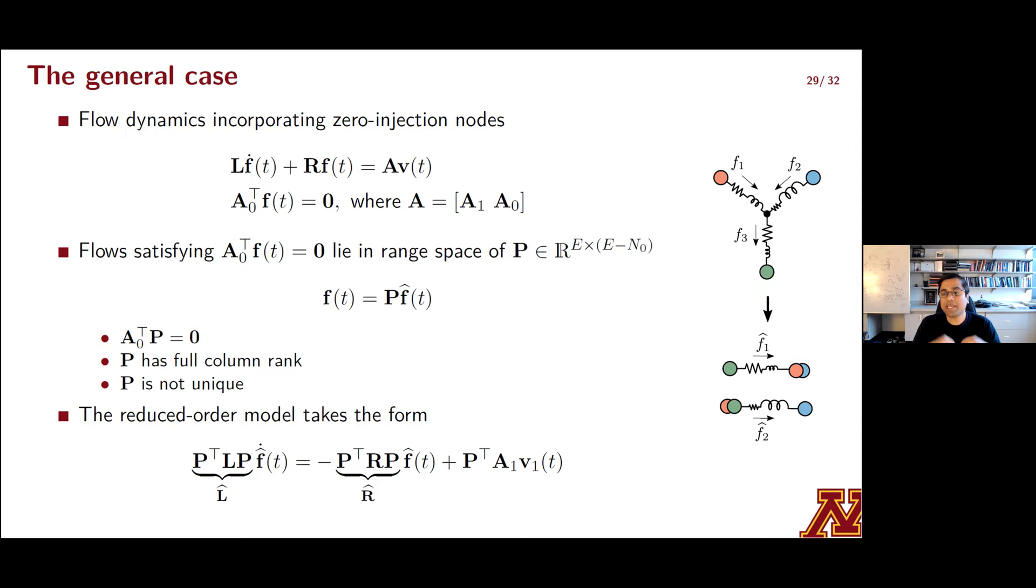What we get is basically a DAE system with E differential equations and N0 algebraic constraints, N0 being the number of zero injection nodes. So it's clear that you only have E minus N0 independent flows and that's what we are after. We can extract these independent flows and what the way we'll extract them is we'll project these flows F from the original network onto the range space of a matrix P and F hat in this case will denote a set of pseudo flows that are indeed independent. So while this matrix P is not unique, you can actually infer several properties about it.